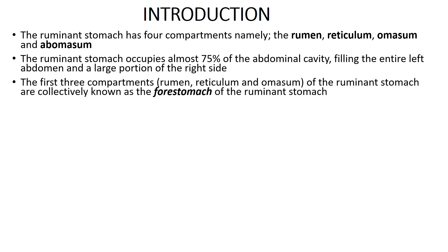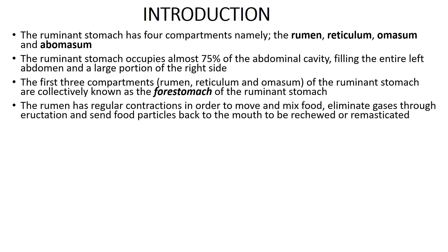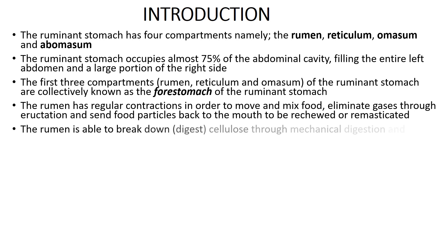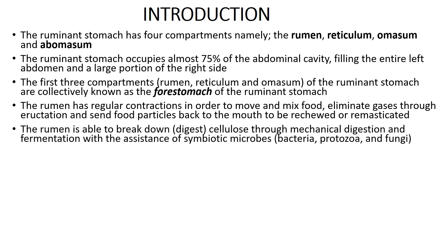The first three compartments of the ruminant stomach — that is the rumen, the reticulum, and omasum — are collectively known as the fore stomachs of the ruminant stomach. The rumen has regular contractions in order to move and mix the food, eliminate gases through eructation (belching in human beings), and send food particles back to the mouth to be rechewed or remasticated. The rumen is able to break down and digest cellulose through mechanical digestion and fermentation, with the assistance of symbiotic microbes such as bacteria, protozoa, and fungi.